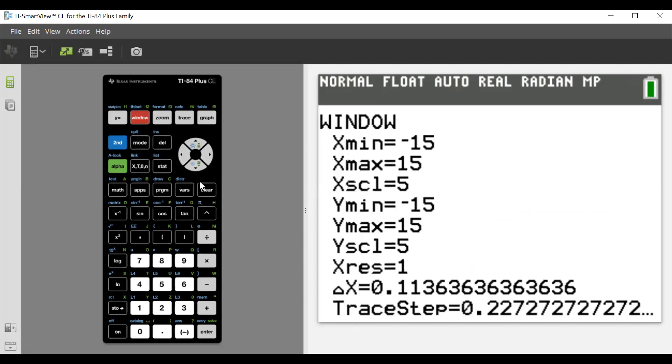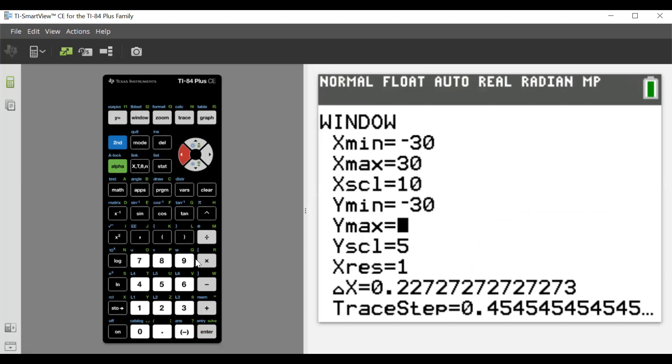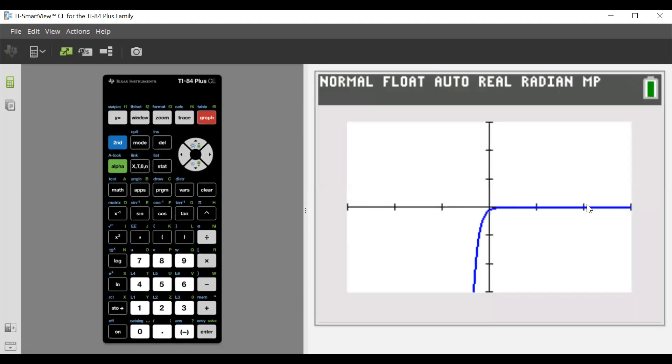if we're going further out each way, we could go from negative 30 to 30 by 10, and negative 30 to 30 by 10. And again, it doesn't matter. We're still seeing the same thing, and that's what we would expect for the graph of -e^(-x).